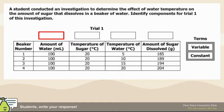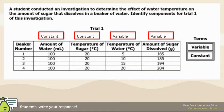In this experiment, you're looking to identify the variables and the constants. The constants are always what's going to be the same, so the amount of water and the temperature are the same numbers going down — those are your constants. The temperature of the water and the amount of sugar dissolved are the variables because they are what is changing.